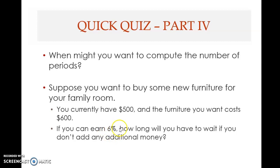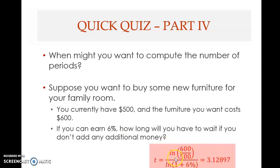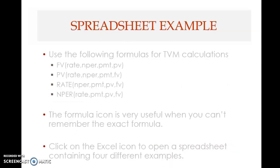The unknown fourth element is how long you would have to wait — N is not known. Using the formula: 600 divided by 500, you take the natural log of this ratio, then divide by the natural log of 1.06 (i.e., 1 plus 6%). You get 3.12897 — slightly more than 3 years. That's the answer.